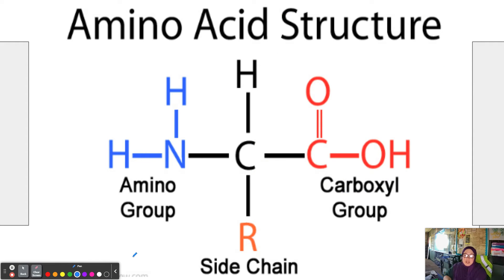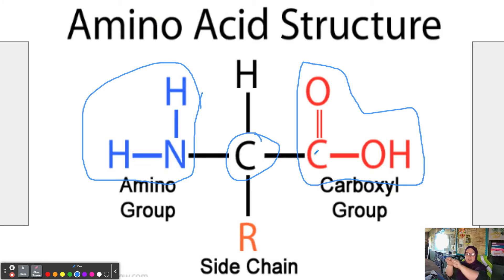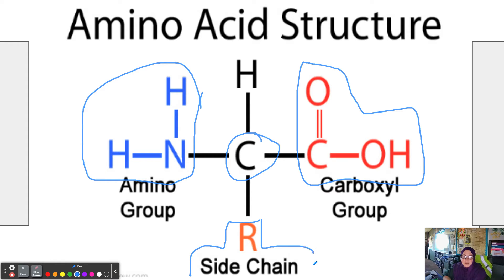Our amino acids are formed of an essential carbon. Attached to that we have the amino group and the carboxyl group — these are the two sides that make up the chain of amino acids. When amino acids link together one after the other, the amino group and carboxyl group connect. That little piece that makes each amino acid different from the next is the structure of atoms called the side chain.